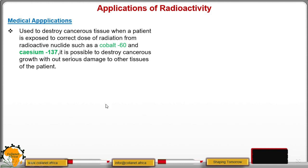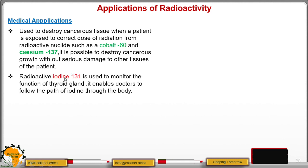For example, if you are using Cobalt-60 and Caesium-137, it is possible to destroy cancerous growth without serious damage to other tissues of the patient. Then we have radioactive Iodine-131, which can be used to monitor the functioning of the thyroid gland.